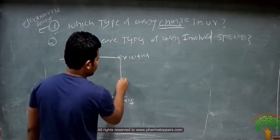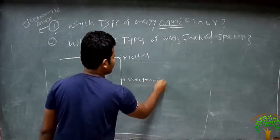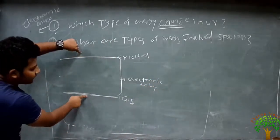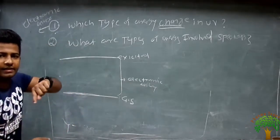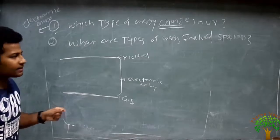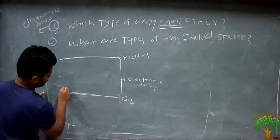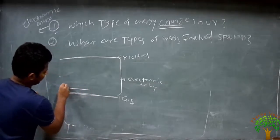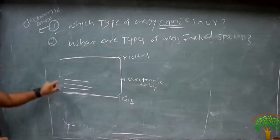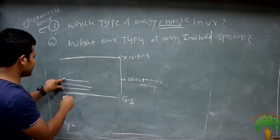This is the electronic energy that mainly occurs in UV spectroscopy. But each electronic energy contains transitions of the vibrational energy. It means the electronic energy contains small vibrational energy levels within them. This is the vibrational energy that is present in the electronic energy.